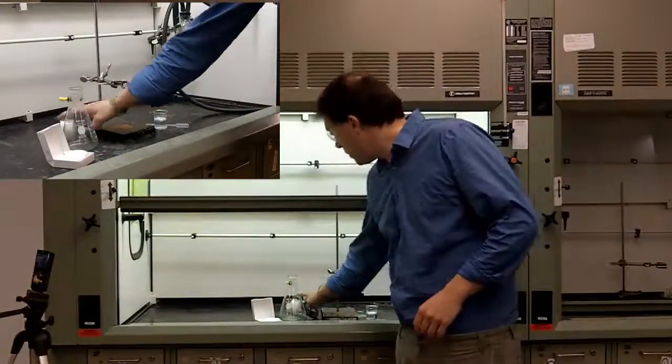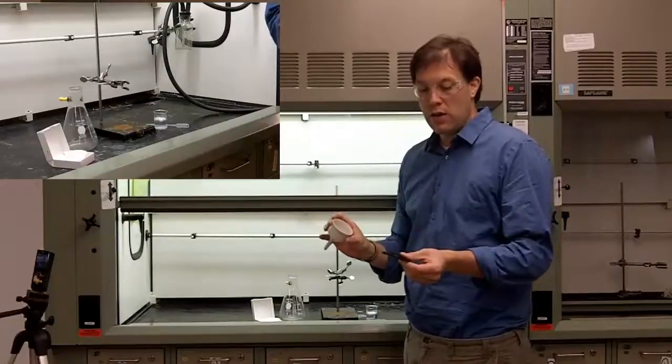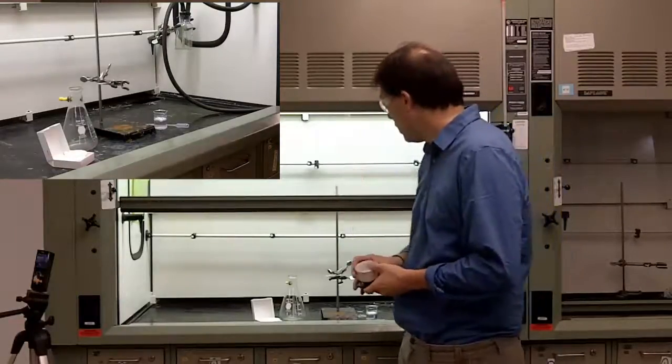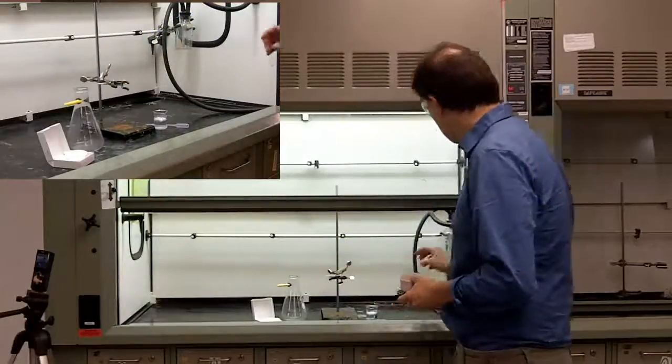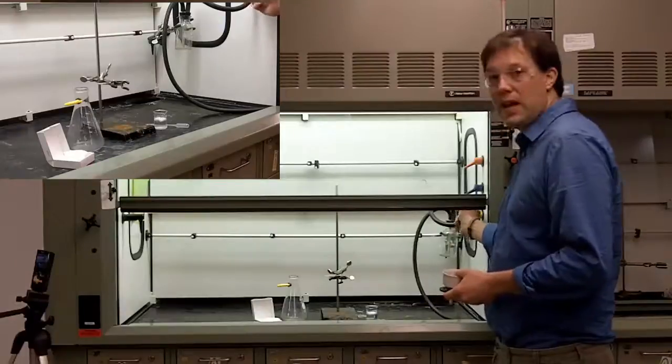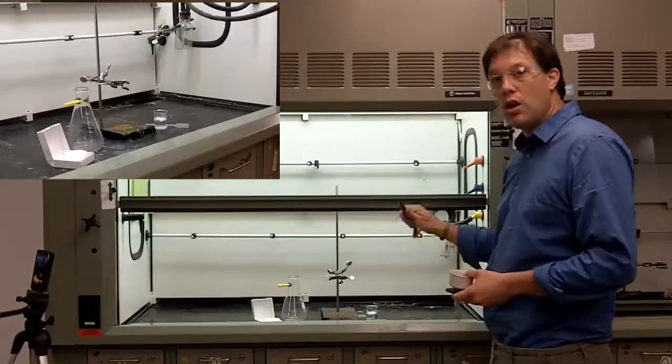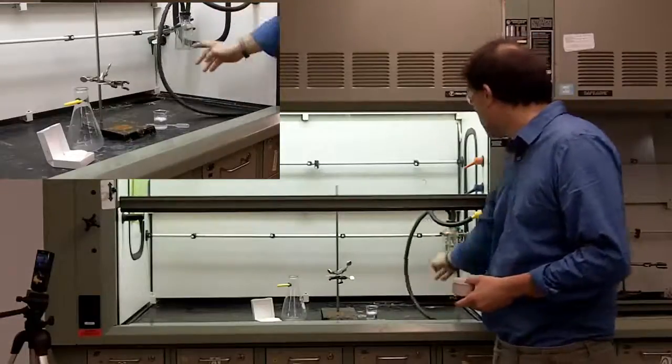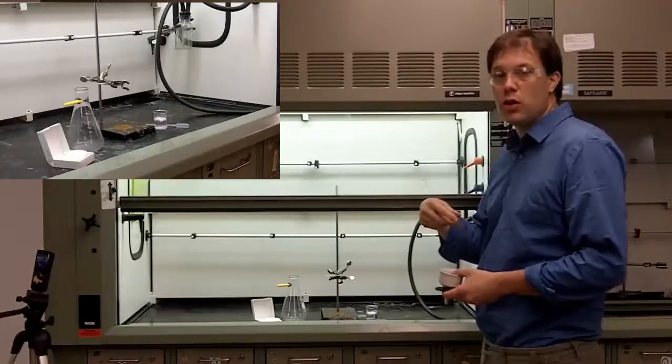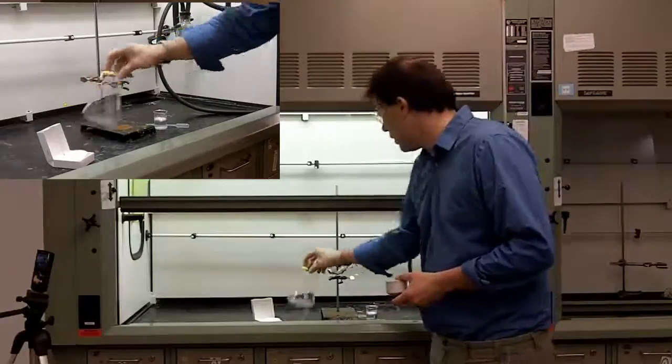You need filter paper, a filter funnel, and this black ring which helps create the vacuum to pull the air through the funnel, a sidearm flask, and a suction source which normally is a vent either on the bench top or inside the hood, and you should also have a trap attached to it. This is a trap that stops the liquid that you are filtering off from being sucked into the house lines and hurting them.